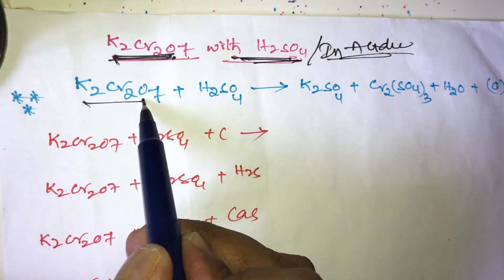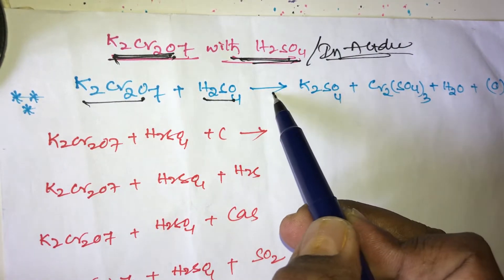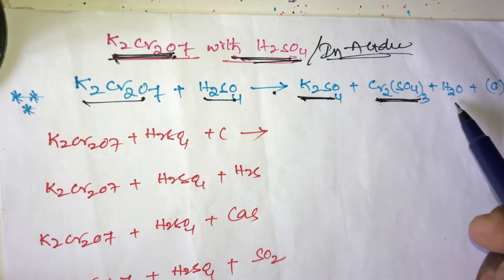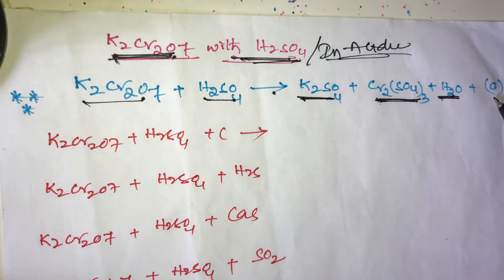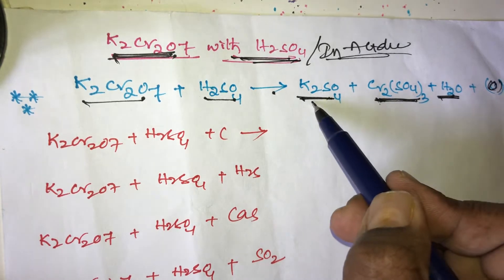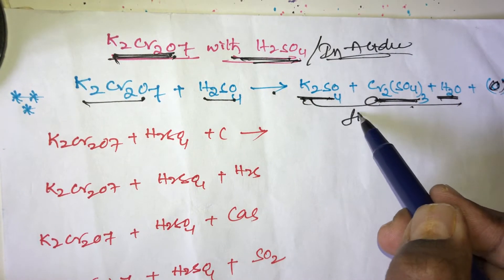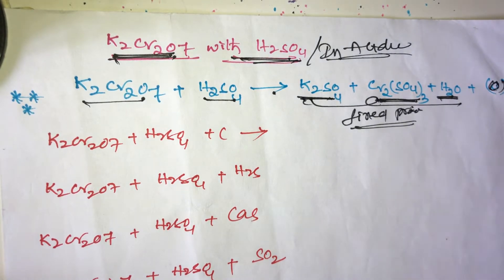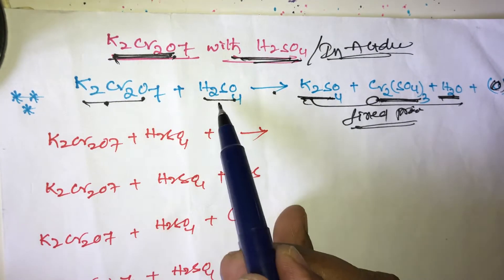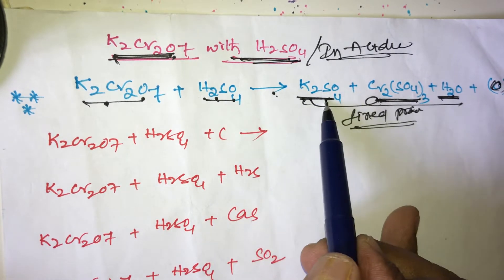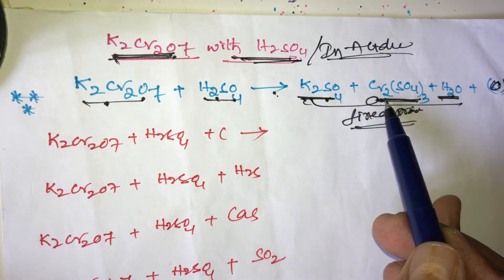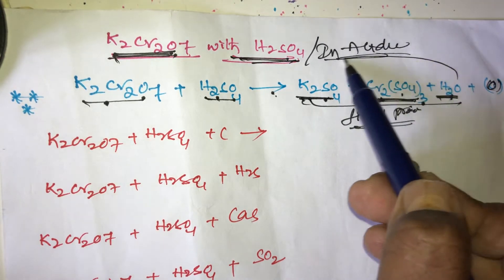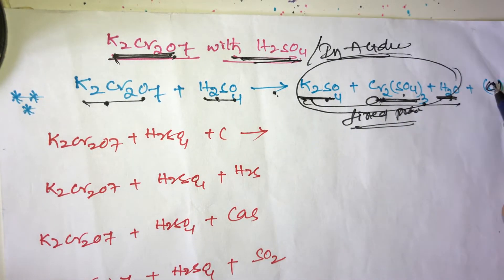Now, K2Cr2O7 plus H2SO4 gives rise to K2SO4 plus Cr2(SO4)3 plus water — plus the oxidation process. These three products — K2SO4, Cr2(SO4)3, and water — are the fixed products, plus the oxidation process.